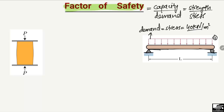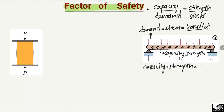Due to this load, there will be some resistance provided by the beam in order to take this load. This resistance created by the beam section is the capacity, or strength, of the beam. Let's assume the capacity or strength of this beam is 80 kN per square meter, while the demand or stress is 40 kN per square meter.